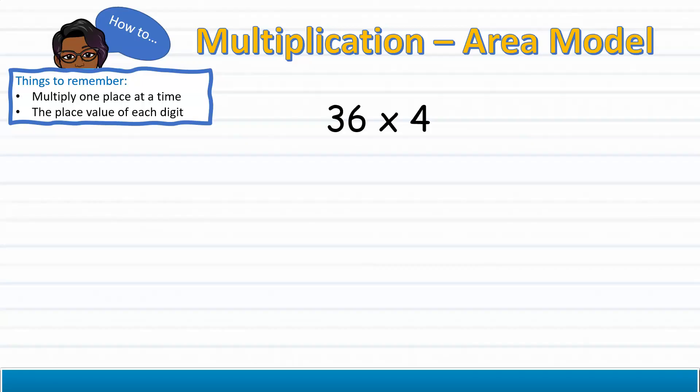Let's begin using the Partial Products Strategy by solving this problem, 36 times 4. After lining up my numbers vertically, I will begin by multiplying the 4 by the 6 in the ones place. As we can see here...